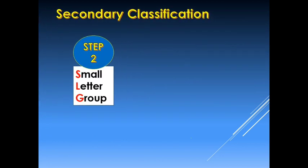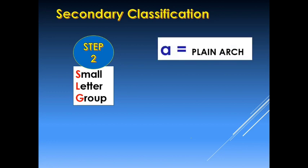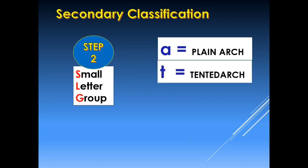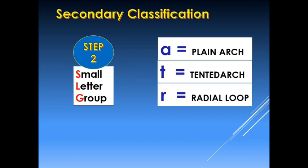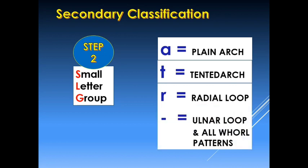The second step in secondary classification is to apply the small letter group, which involves all fingers except the two index fingers. We use small letter A for plain arches, small letter T for tented arches, small letter R for the radial loop, and a dash for the ulnar loop and other whorl patterns.